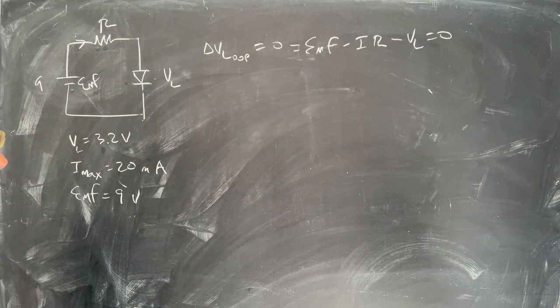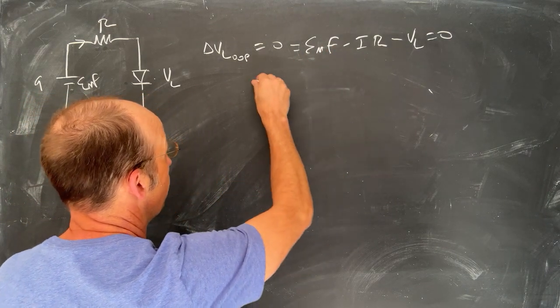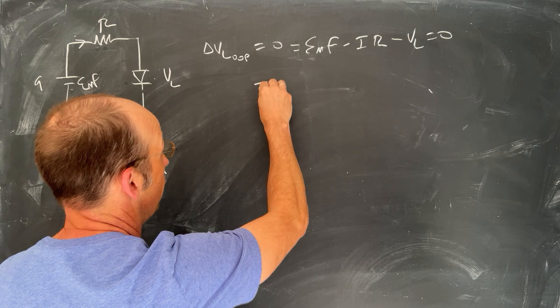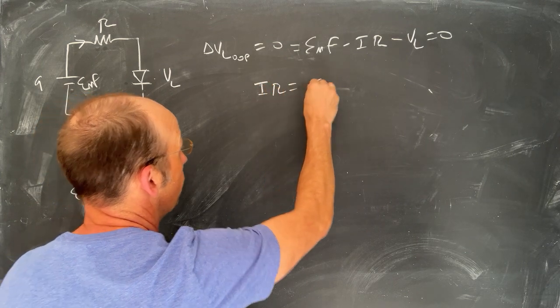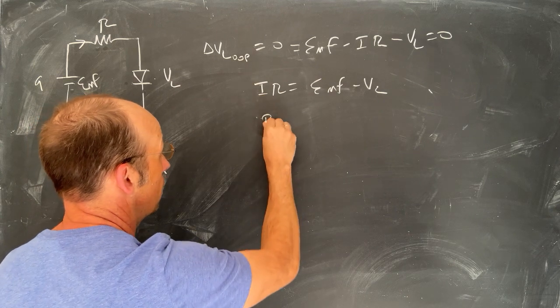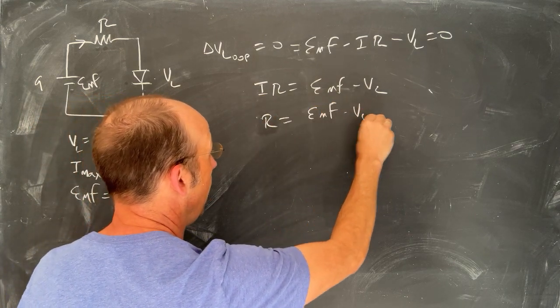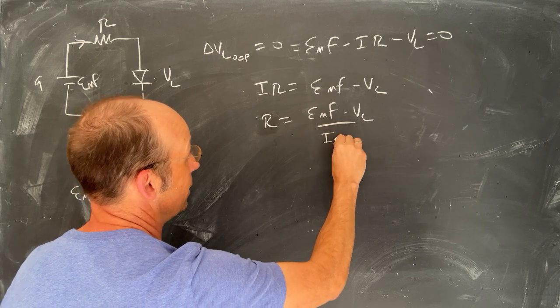So now I just need to solve for the value of R. Let's just solve this generically. So I'm going to add those two things to the other side, or I'm going to add IR to the other side. IR equals EMF minus VL. So R is going to be EMF minus VL over I, and that's I max.